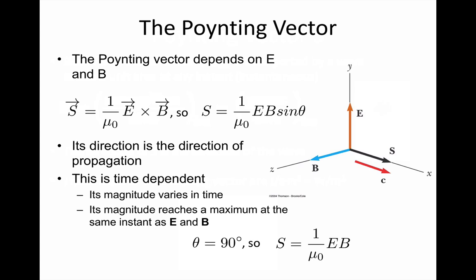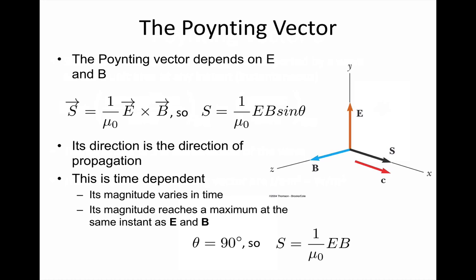Mathematically, we say that S is 1 over mu nought E curl B. So curl, showed by the cross there, is also called the cross product, and it is a way of multiplying two vectors.